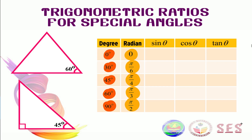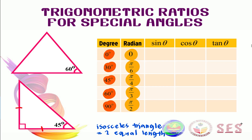First, let's take a look at the 45 degree angle. Trigonometry is all about right-angled triangles. Let's look at an isosceles triangle — a triangle that has two equal side lengths. Since this is also a right-angled triangle, if we place 90 degrees at one corner, the other two angles are both 45 degrees by complementary angles. To make calculation easier, let's set the equal sides' length as 1. By Pythagoras' theorem, the hypotenuse becomes square root of 2.